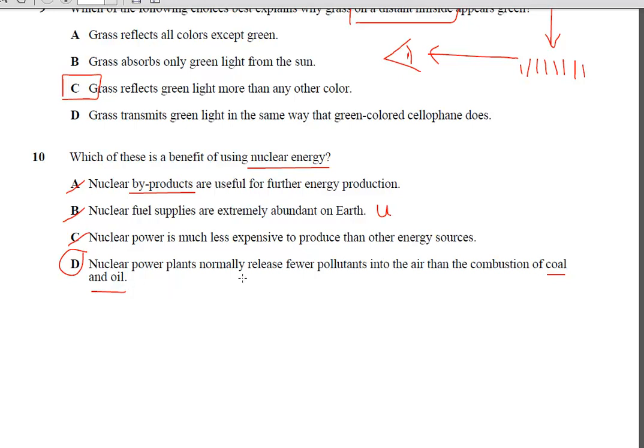So our only alternative here is D. Nuclear power plants normally release fewer pollutants into the air. That's the big thing about nuclear plant power. And the negatives about burning fossil fuels are the combustion of coal and oil. Combustion, of course, means burning. So, correct answer, D. Nuclear power plants release fewer pollutants into the air.